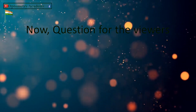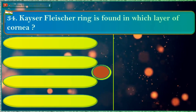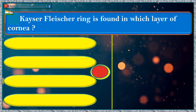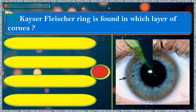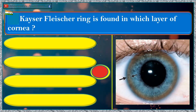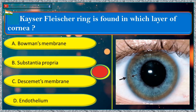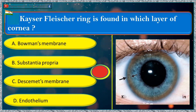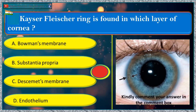Now, a question for the viewer: Kayser-Fleischer ring is found in which layer of the cornea? a. Bowman's membrane, b. substantia propria, c. Descemet's membrane, d. endothelium. Kindly comment your answer in the comment box.